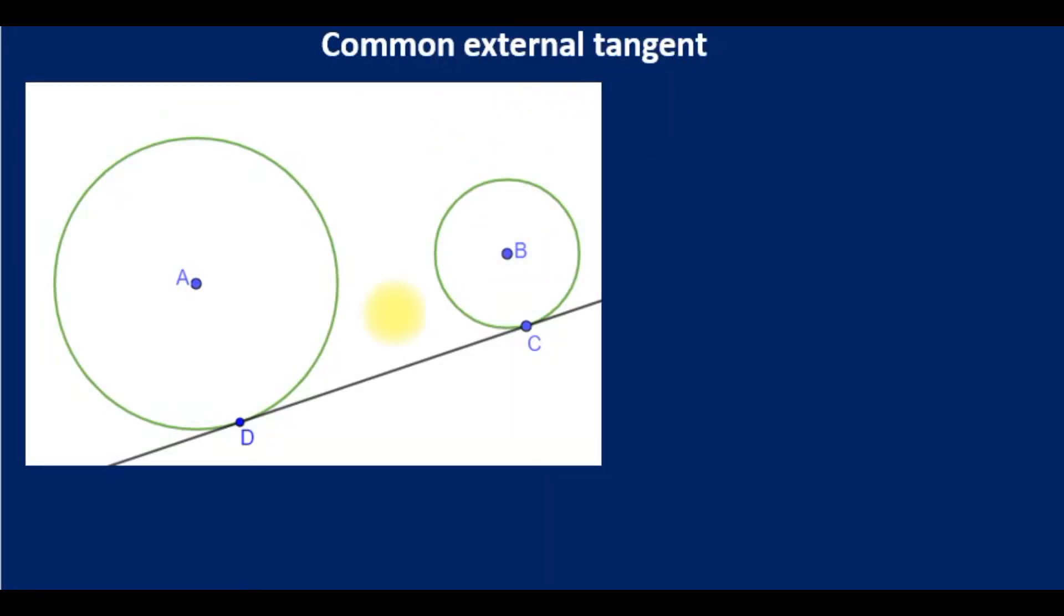The common external tangent is any tangent that runs from one circle to the other. If it runs from point D to another point here, it's called a common internal tangent. Let's now get a formula for that. If we draw a line